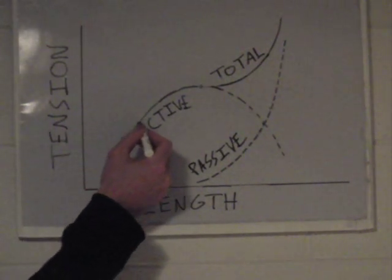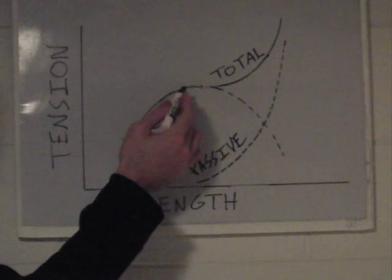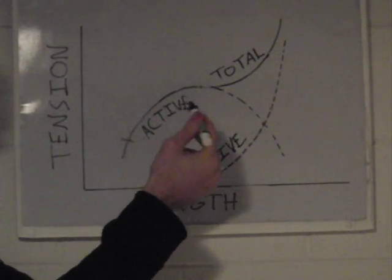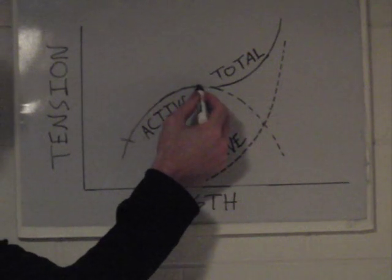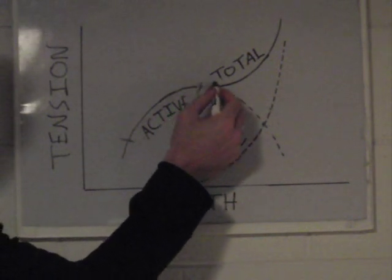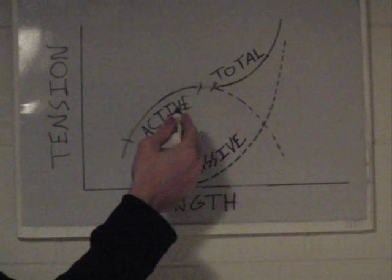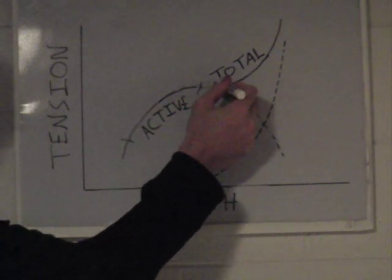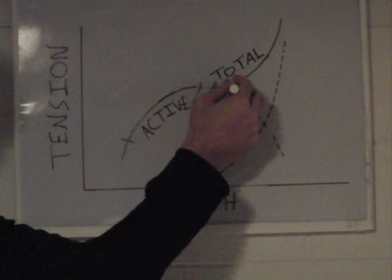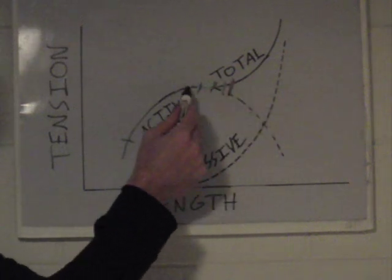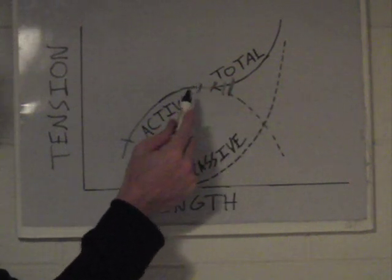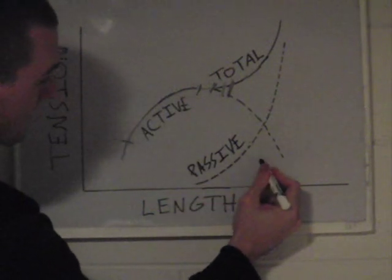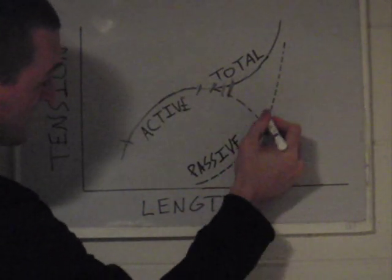As we lengthen the muscles — let's say at the bottom of a bench press — your pectoralis and triceps muscles are going to be somewhere out in the longer range of the curve. At the bottom of a squat, your glutes and quads are probably going to be out in that same range, pretty close to peak active tension. If you're stretching, your muscle is going to lengthen all the way out to the right and you'll be on the passive tension curve.